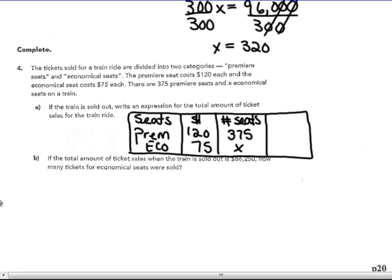So what is the total sale then? So the total money. So if you have 375 seats and they each cost $120, you multiply that and you get $45,000. You have X number of seats times $75. You have $75X. Write an expression for the total amount of ticket sales for the train ride. Well, that's what my total column is helping me figure out. So I have $45,000 for those premier seats plus $75,000 times the number of economical seats, which I don't know. That's the expression. No equal sign.